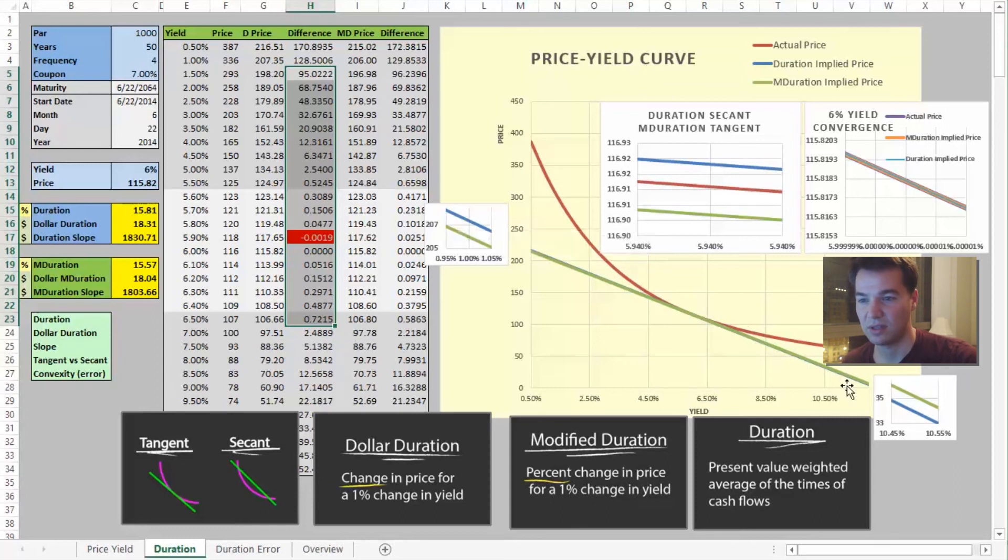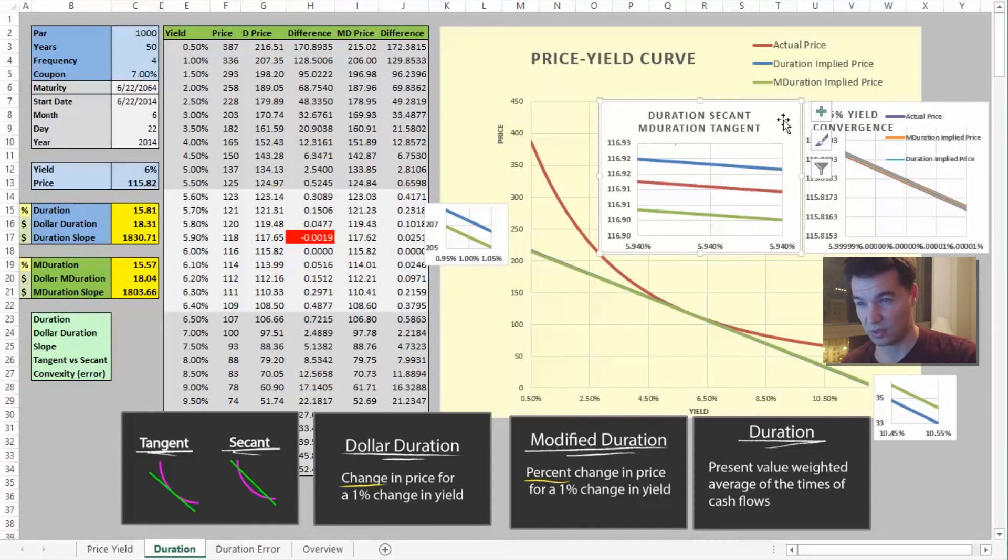And we see the duration line here above, higher here, lower here. So it's steeper and it is above the price-yield curve on the left because it's steeper than the tangent line. If it were less steep, it would be above the price-yield curve on the right side. So this here is a zoom-in at 5.94 percent, where the duration line is above the price-yield curve, and then the modified duration line is below, as it always is, except for where it meets the price-yield curve at 6 percent.